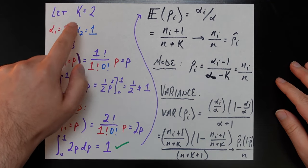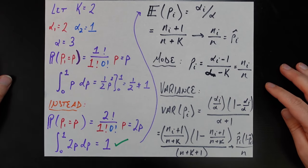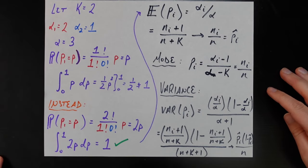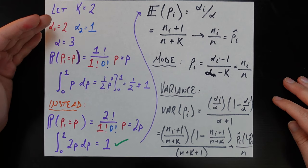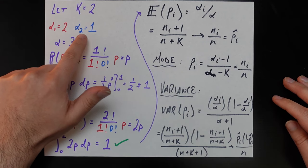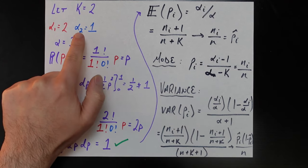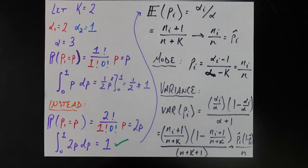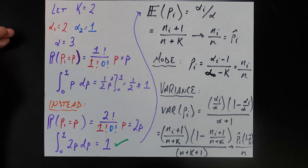Our toy example uses k equals two classes, so we don't even need the Dirichlet distribution — we can use the beta distribution — but it's easy to reason through, and the same logic applies to three, four, five, and more classes. Let's say alpha_1 equals 2 (one math major, so 1 plus 1), and alpha_2 equals 1 (zero science majors, so 0 plus 1). Alpha is the sum, so alpha equals 3.